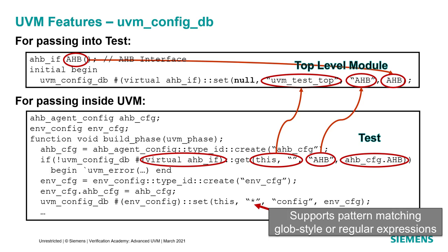It is important to note that the config database can have a substantial impact on performance, so we recommend being as efficient as possible. Using wildcards in the path expression is particularly expensive. We recommend using config objects as much as possible and minimizing the number of set and get calls. Since all agents have the same API and structure, you could use a single config DB get call in your agent to retrieve a configuration object that has everything the driver and monitor need, then have the agent set those fields directly after building the driver and monitor.